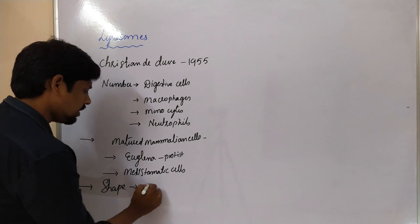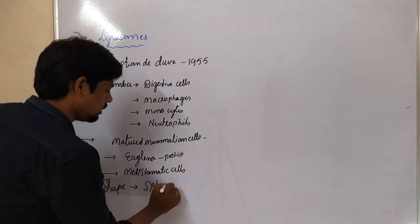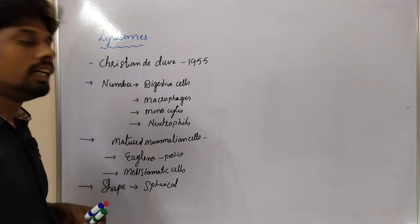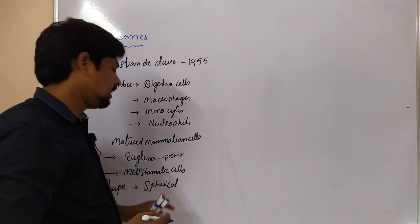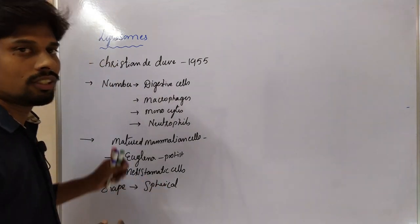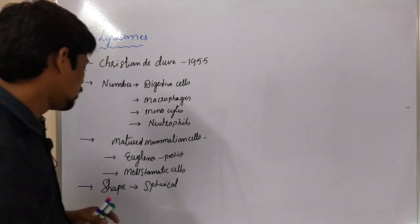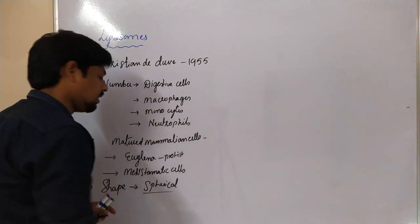Coming to the shape — lysosomes are most probably spherical. In some instances the shape of lysosomes may vary, but most probably they are spherical.